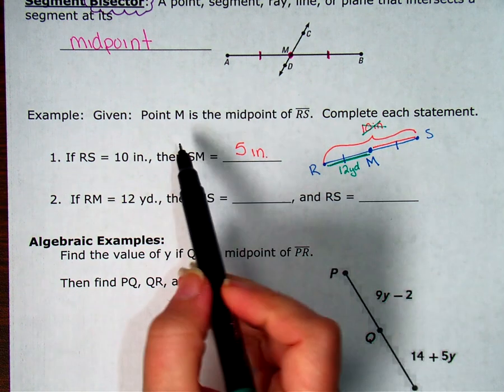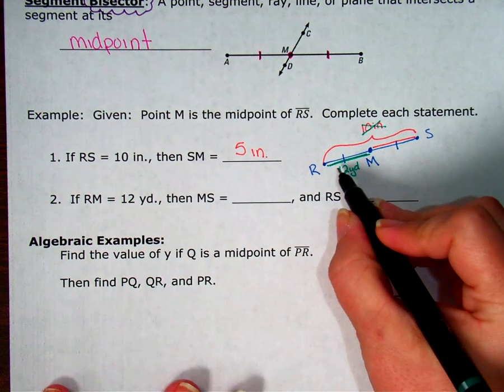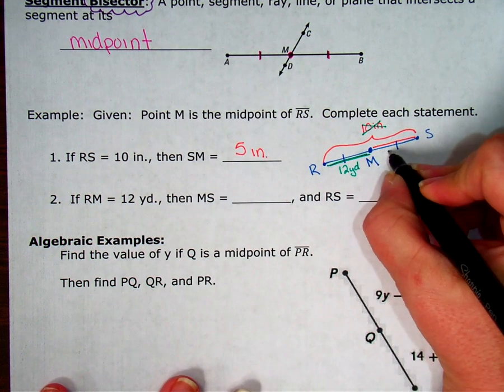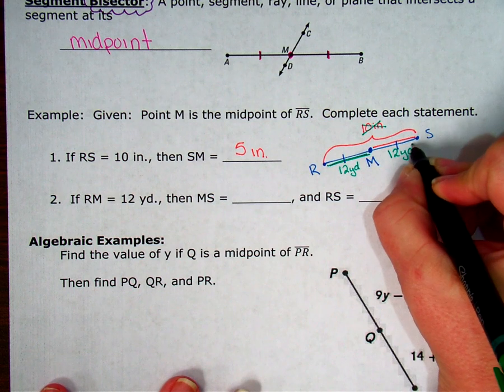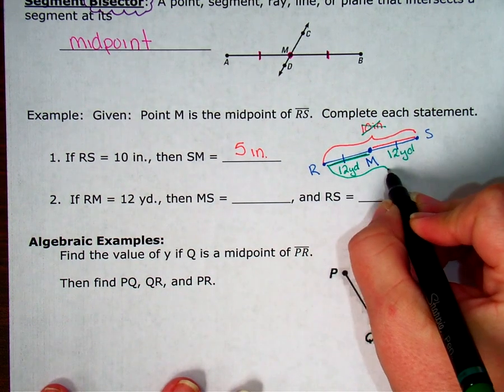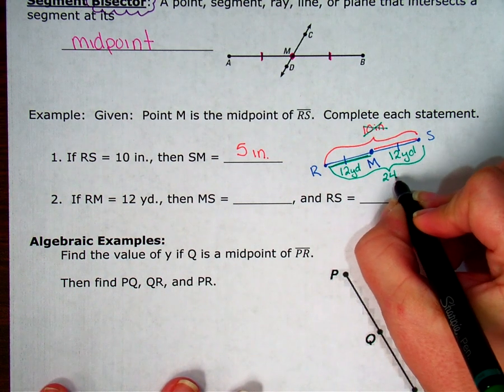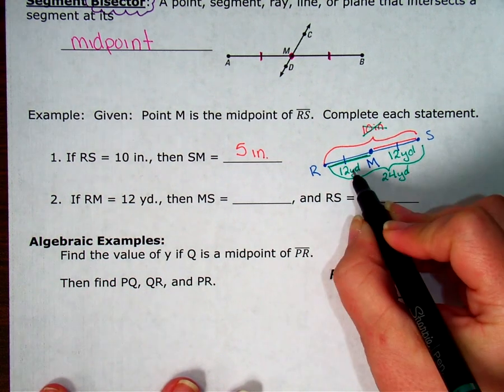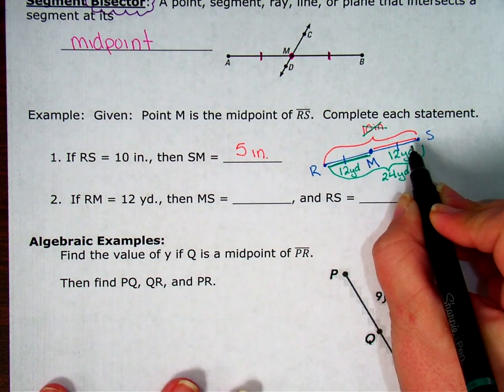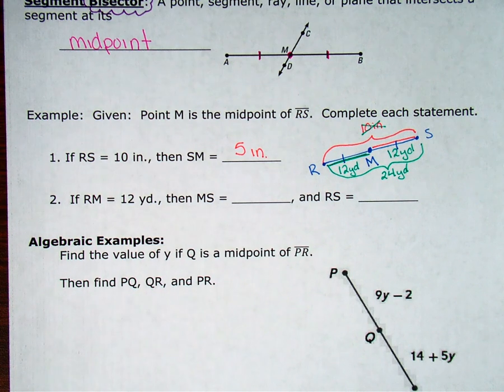But we still use the same direction. So M is still the midpoint, which means if it's 12 yards on one side, it's also 12 yards on the other side, which means I do know how long the whole thing is. The whole thing is 12 yards plus 12 yards, which is 24 yards. So notice I used my segment addition property from last week to get that this was 24 yards.